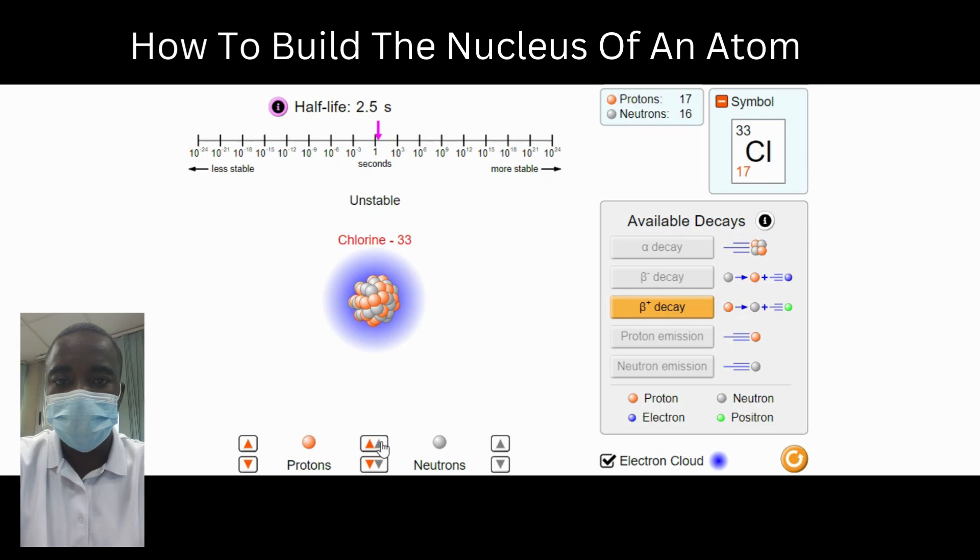In summary, the number of protons in the nucleus determines the element, the number of neutrons determines the mass and stability of the atom, and the number of electrons determines the atom's properties.